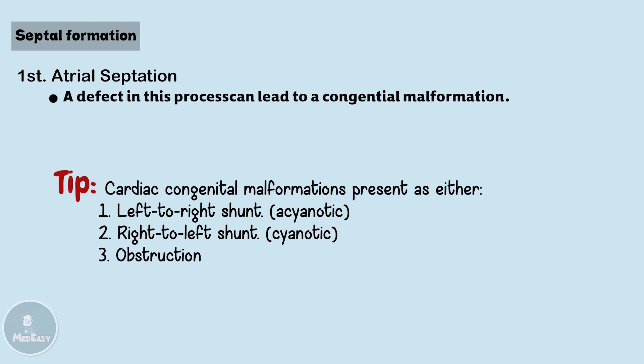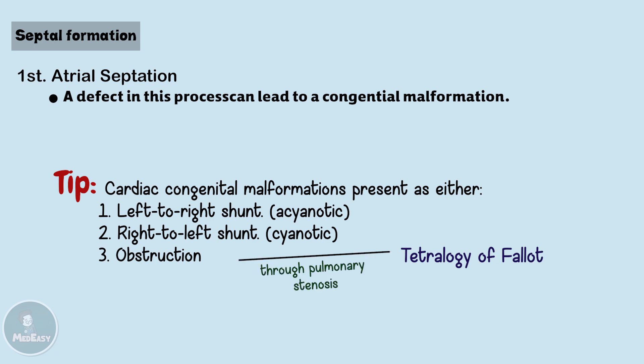A shunt is any abnormal communication between chambers or blood vessels. In some diseases, more than one presentation can occur, like in tetralogy of Fallot, where an obstruction — pulmonary stenosis — is also associated with a right-to-left shunt through a ventricular septal defect.